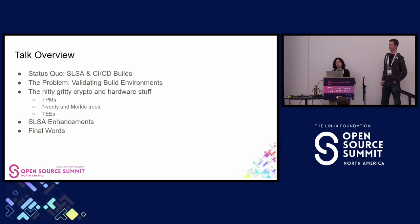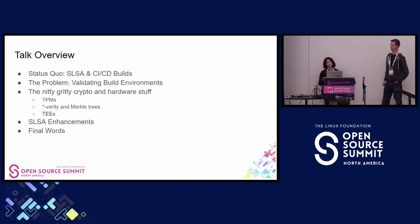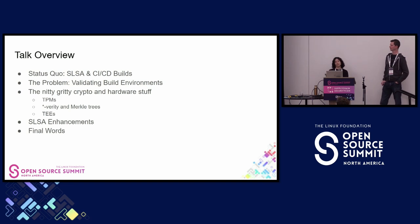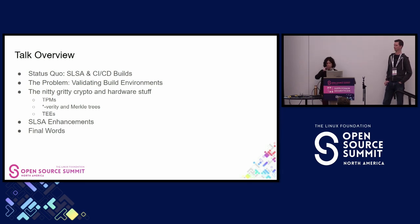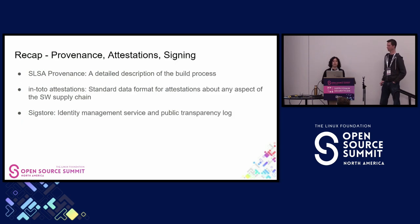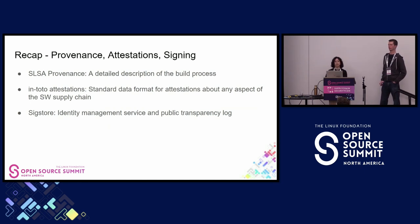To give a brief overview of what we're covering: we'll start with the status quo, especially around the OpenSSF SLSA framework and CI/CD builds and pipelines. Then we'll move into the problem and the importance of validating build environments. Next, we'll jump into the nitty-gritty crypto and hardware — TPMs, Verity modules, Merkle trees, TEEs, and confidential computing. Finally, we'll see how that fits in as SLSA enhancements. We're assuming most people here have some base knowledge of software supply chain technologies, including provenance, attestations, and signing.